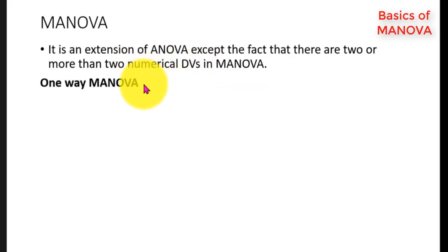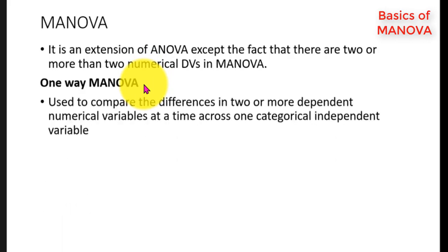MANOVA can be one-way MANOVA as well as two-way MANOVA. One-way MANOVA is used to compare the differences in two or more dependent numerical variables at a time across one categorical independent variable.